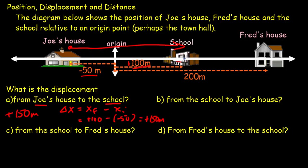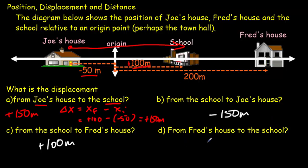From the school to Joe's house, it's 100 meters plus 50 meters but to the left, so negative 150 meters. From the school to Fred's house, that would be 100 meters to the right, or plus 100 meters. And from Fred's house to the school, that would be minus 100 meters.